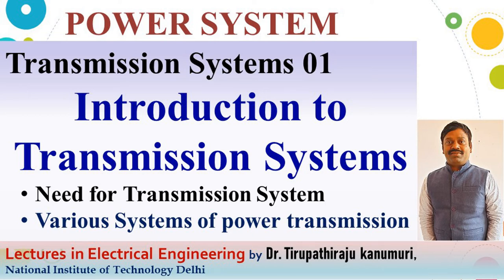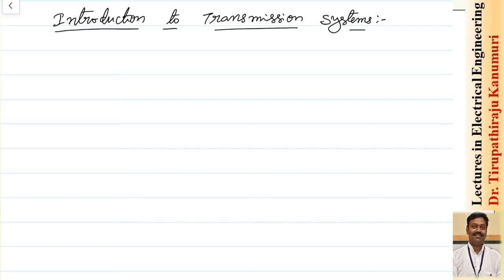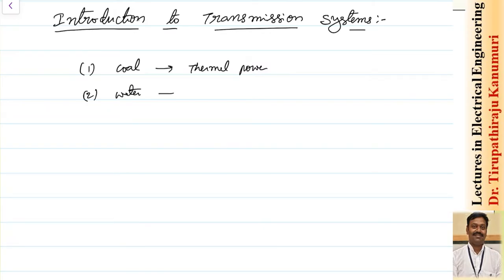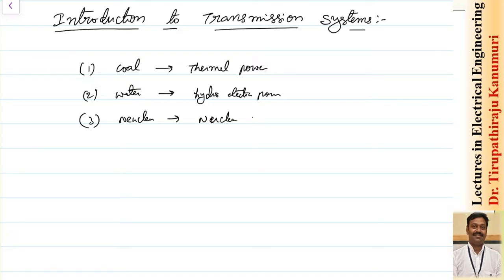Hi all, today we are going to discuss about introduction to transmission systems. Initially we know that power can be generated using different procedures. The conventional procedures are: first, we can use coal — power generated using coal is called thermal power. Second, power can be generated from water, where potential energy is converted to kinetic energy — that is called hydroelectric power. Third, using nuclear energy, which is called a nuclear power plant.